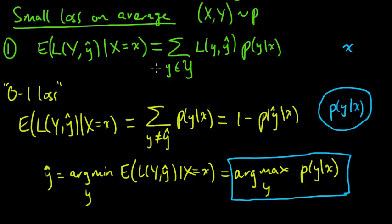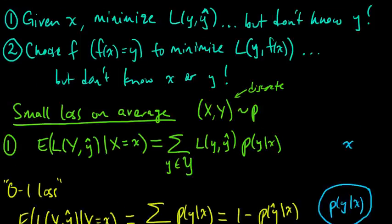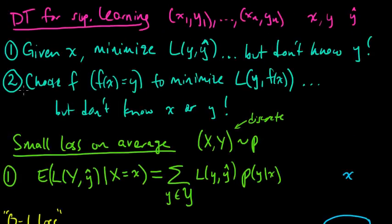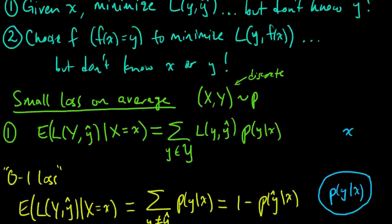We were thinking about decision theory as it applies to supervised learning, and we found that what we wanted to do was to minimize the expected loss. In Case 1, when given a particular x, we minimize the conditional expected loss, and we applied it to 0-1 loss. Now let's think back to Case 2, where we want to generalize and choose a function to handle all the x's.